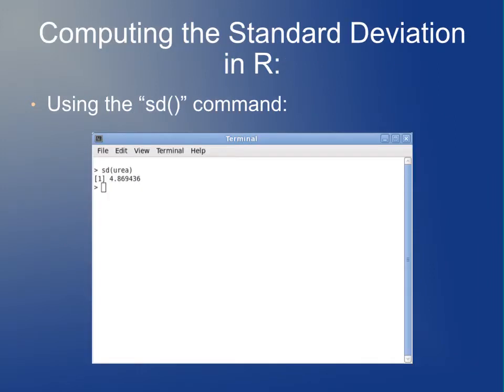To compute the standard deviation in R, the command is sd. You can say sd urea, you get a standard deviation of about 4.87 in this case.